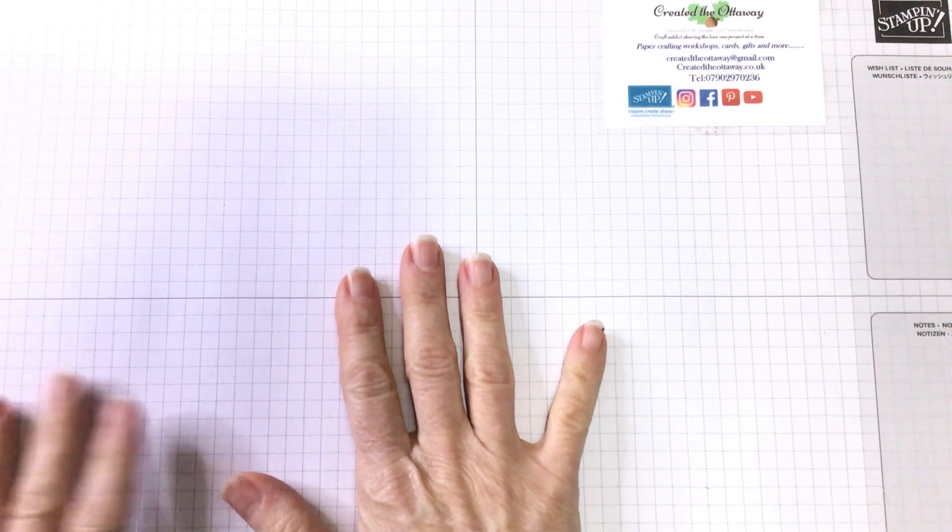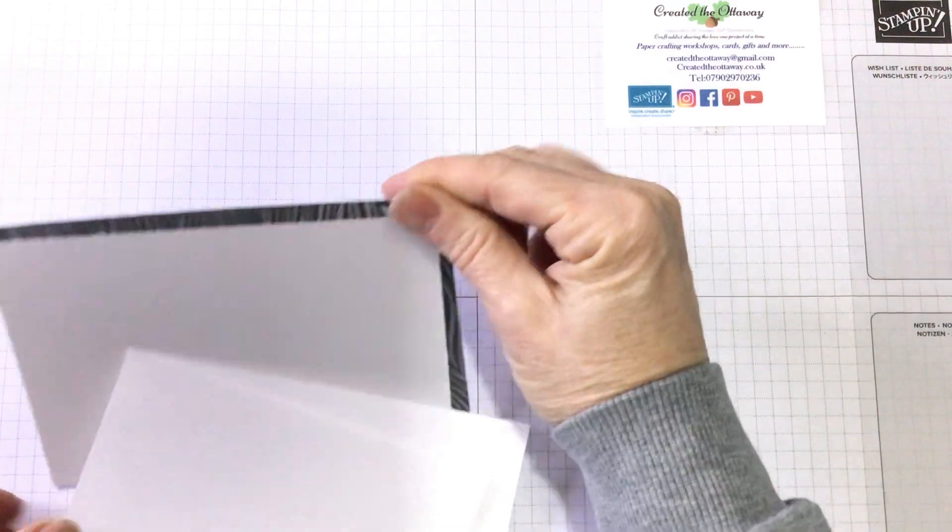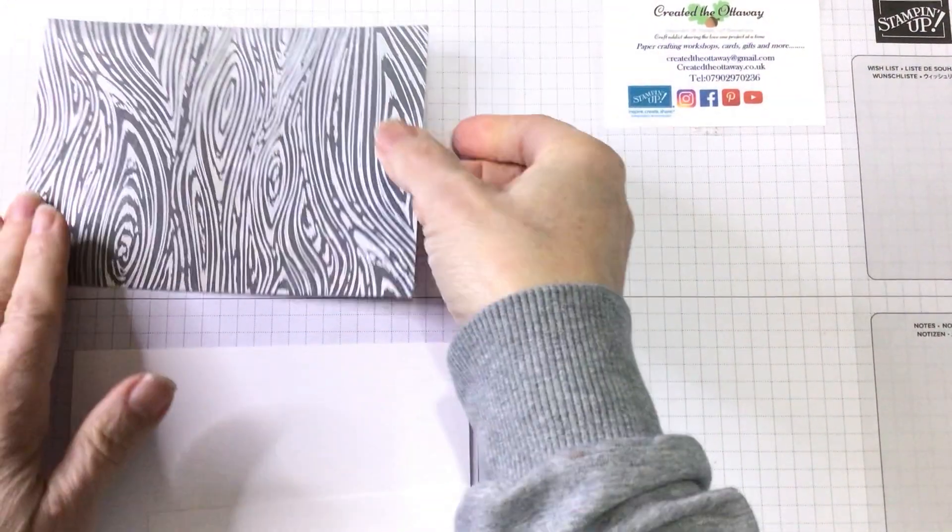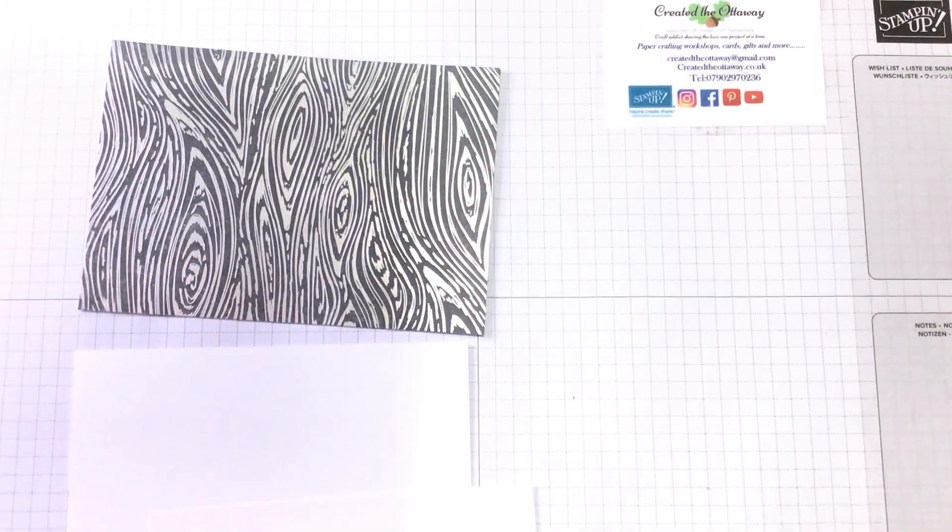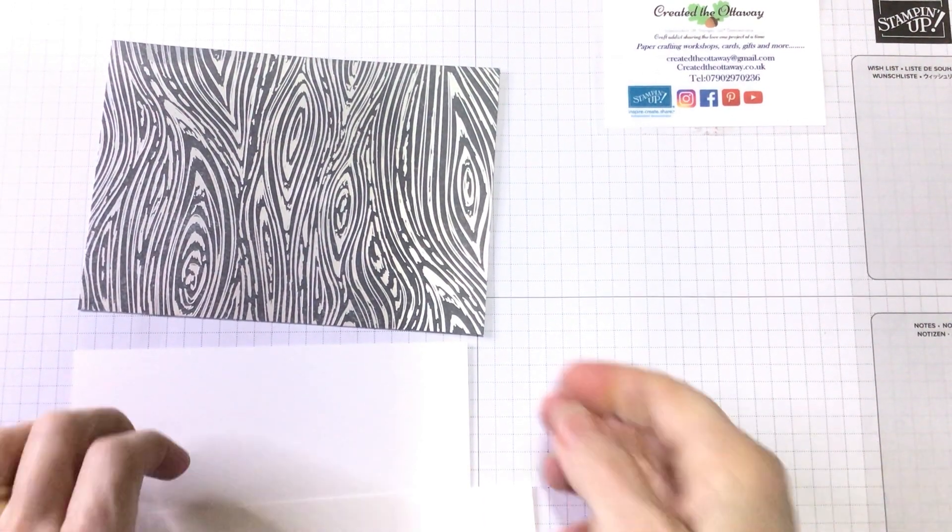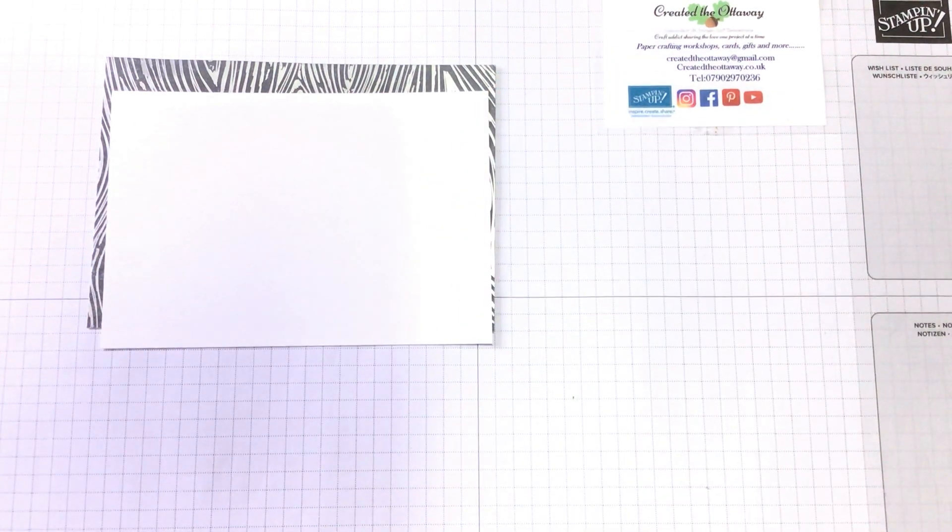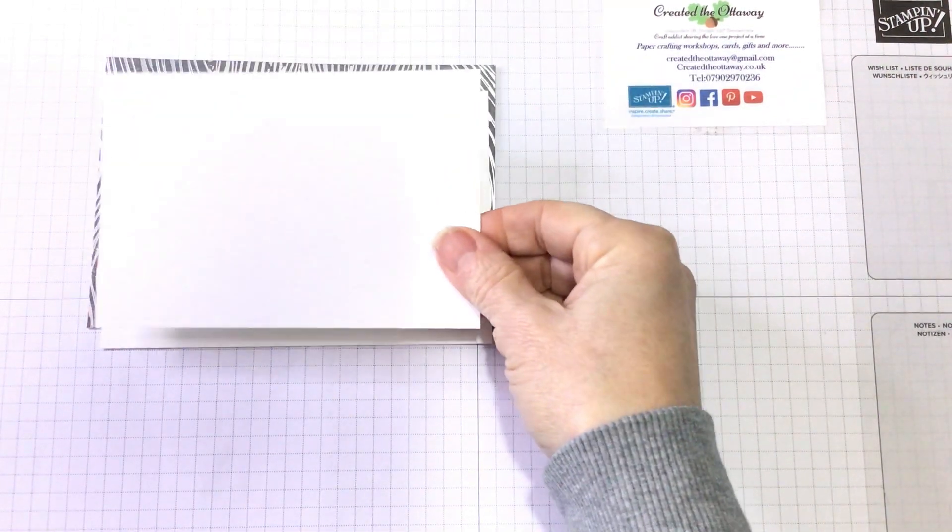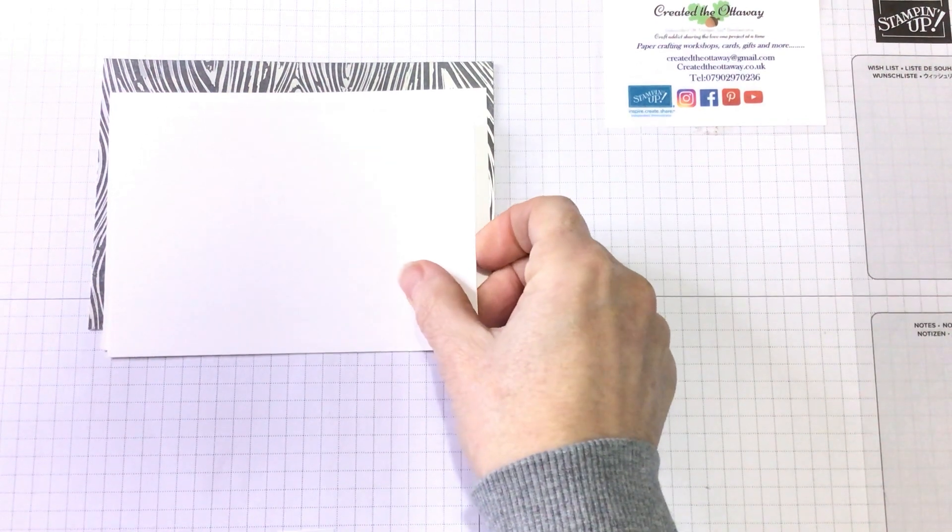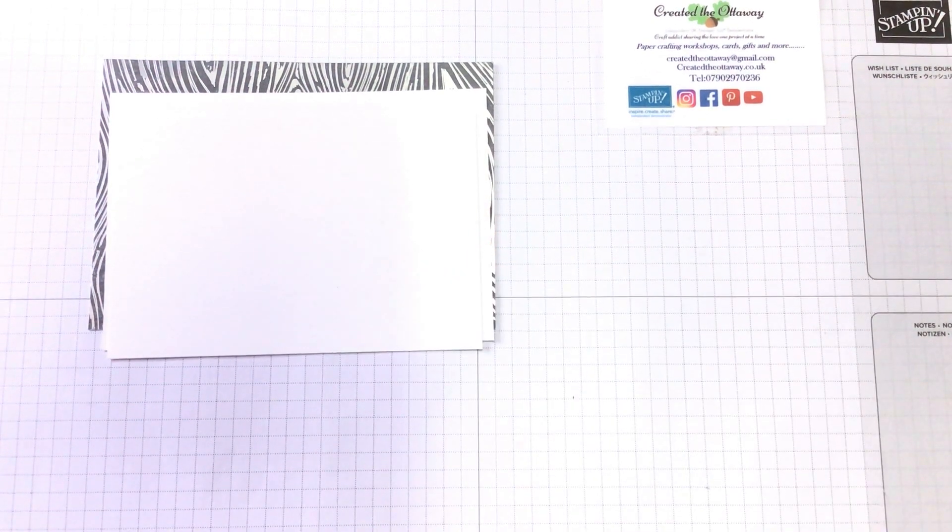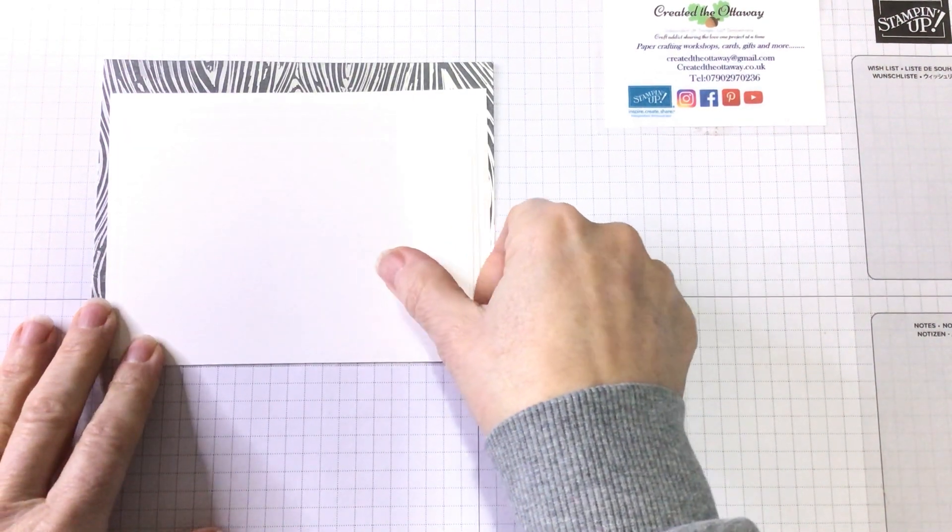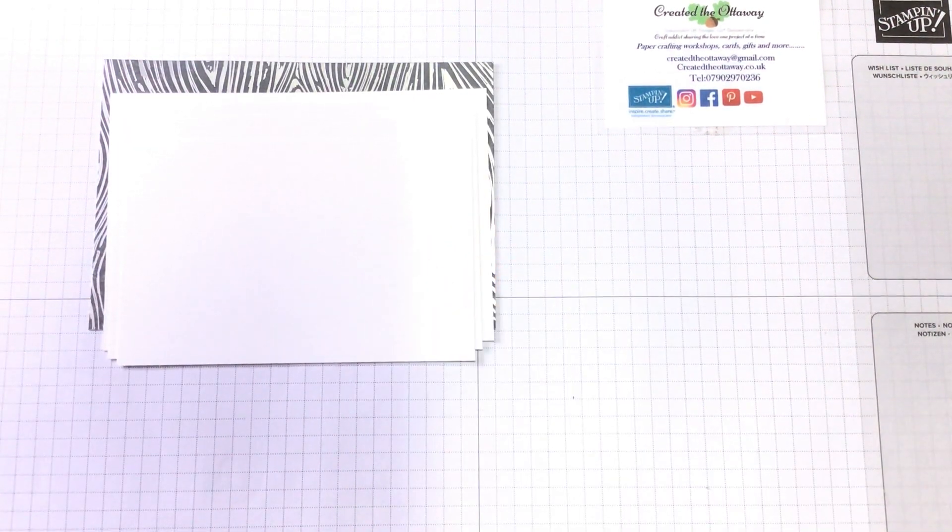So if we put the easel bit to one side, the next thing you need to do is cut your rectangles. So that's my back piece. And that is 5 and 7 eighths by 4 and 1 eighth. Then I've got a rectangle of white that's 5 and 5 eighths by 3 and 7 eighths. Another rectangle that's 5 and 3 eighths by 3 and 5 eighths. And the last piece of white is 5 and 1 eighths by 3 and 3 eighths.